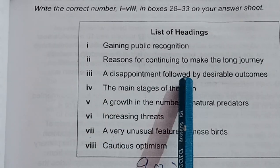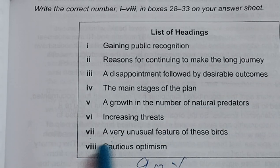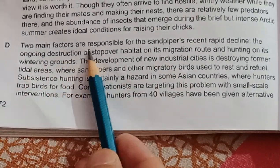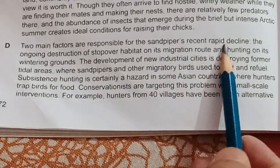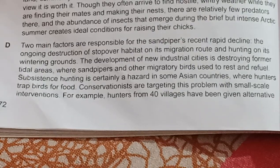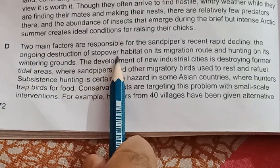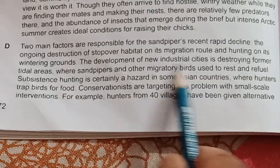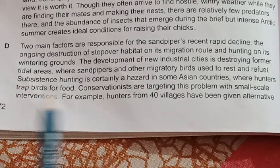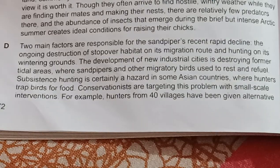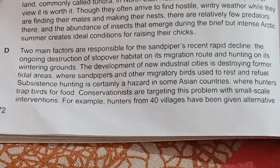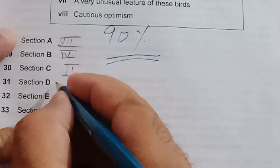We are left with 'a disappointment followed by desirable outcomes,' 'increasing threats,' and 'gaining public recognition.' Look at paragraph D: 'The two main factors are responsible for the sandpiper's recent rapid decline.' Rapid decline means their population decreased — they are dying or there is a risk to their life. The ongoing destruction of stopover sites, industrialization, and destroying intertidal areas are the reasons. The paragraph is about threats — why they are dying. So for paragraph D, the right choice is heading six: 'increasing threats.'